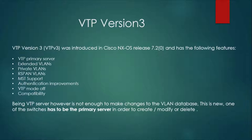First, VTP version 3 introduces the concept of a primary server. In VTP version 1 and 2, we could have multiple switches in server mode making changes, which could replicate across the network. VTP version 3 protects us from that by allowing designation of a primary server.